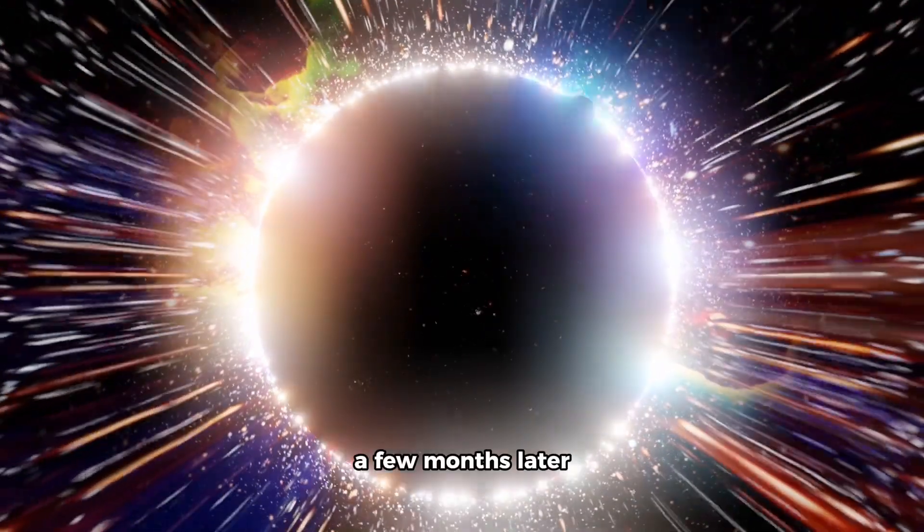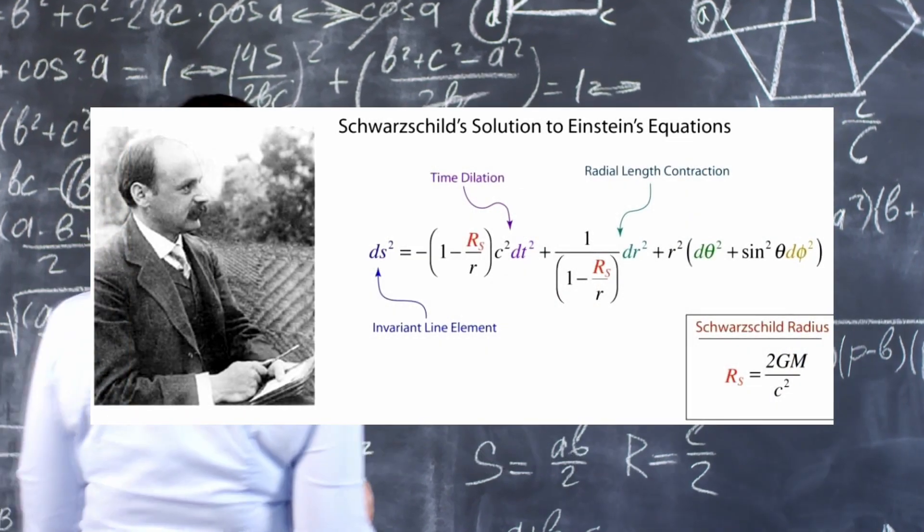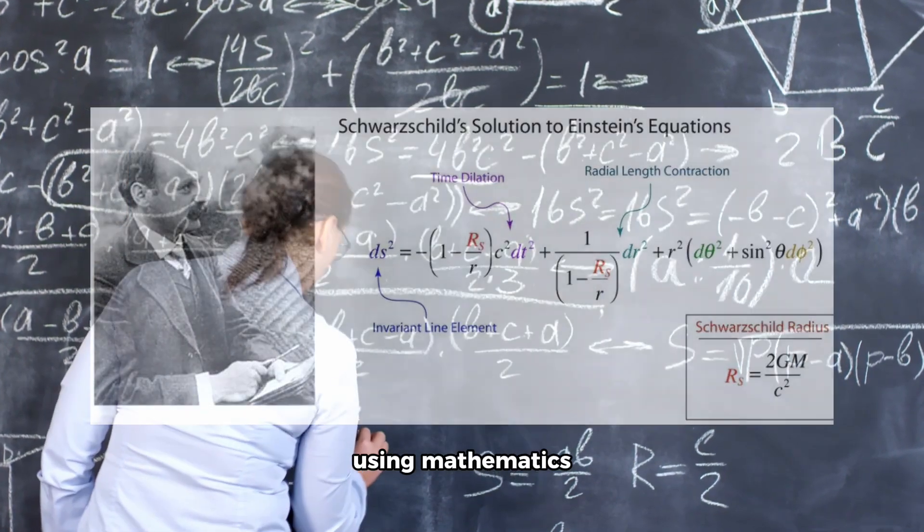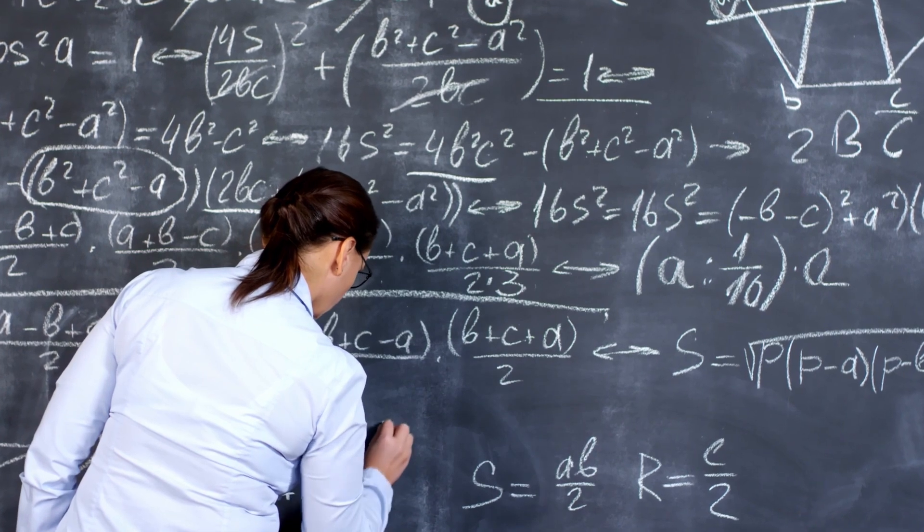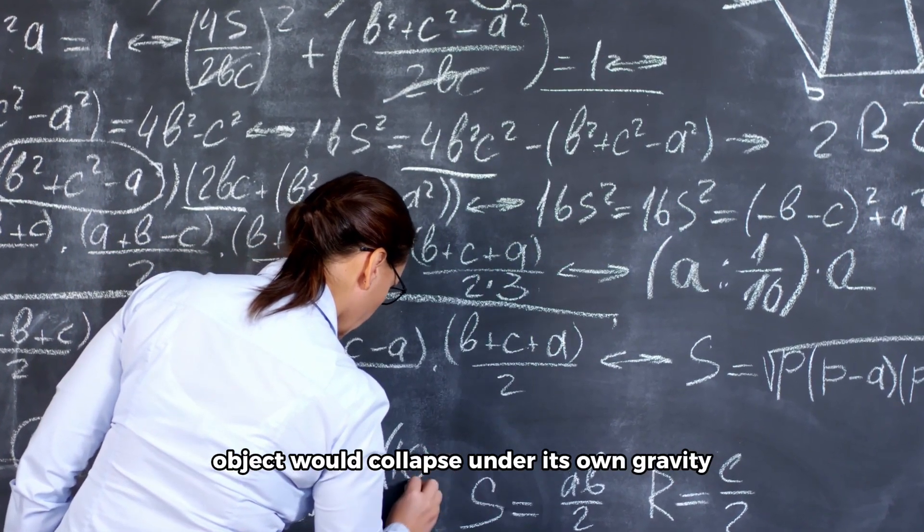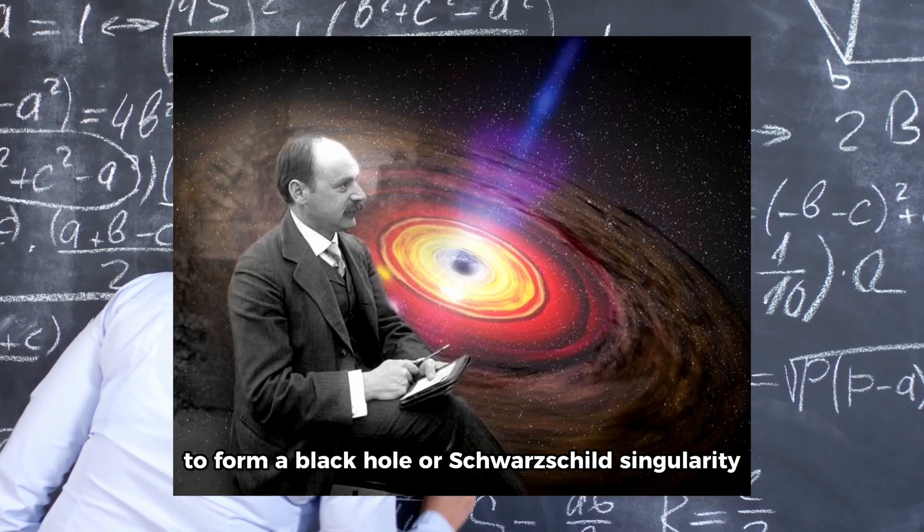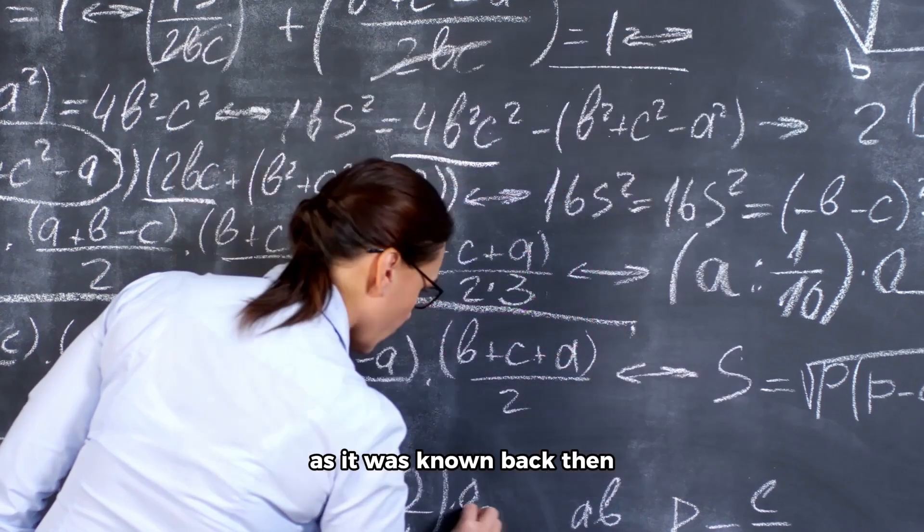A few months later, a scientist named Karl Schwarzschild, working with Einstein's equations, made an important discovery. Using mathematics, Schwarzschild found a solution describing how a massive object would collapse under its own gravity to form a black hole, or Schwarzschild singularity as it was known back then.